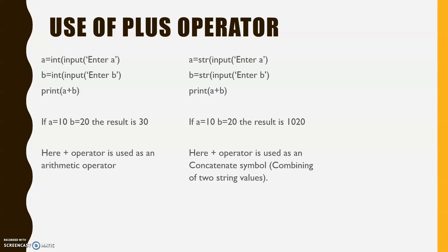The plus operator can be used in two ways: as an addition operator or as a concatenation operator. In the first program, with int(input), if a = 10 and b = 20, plus works as a mathematical addition operator and the result is 30. In the second case, if we use str input, plus works as a concatenation operator, giving the result '1020'.